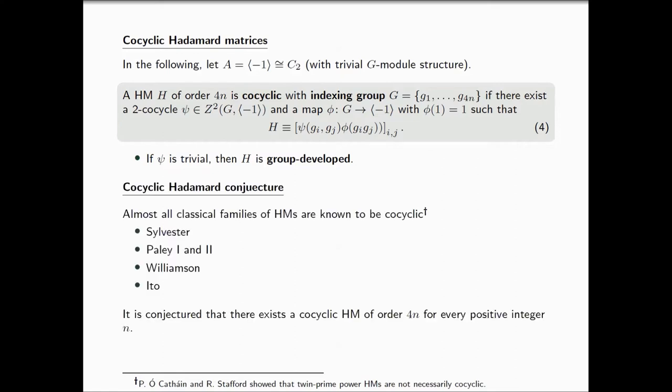Almost all classical families of Hadamard matrices are indeed co-cyclic. Just to name pretty much all of the classical ones: Sylvester, Paley 1 and 2, Williamson and Ito families, they're all co-cyclic. It is indeed conjectured that there exists a co-cyclic Hadamard matrix of order 4N for all positive integers N. Porek proved in the past that there is another classical family, the 2M power construction, that is not necessarily co-cyclic, which is sort of interesting to mention here.